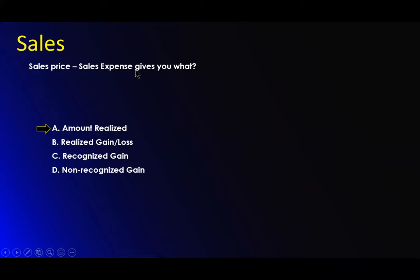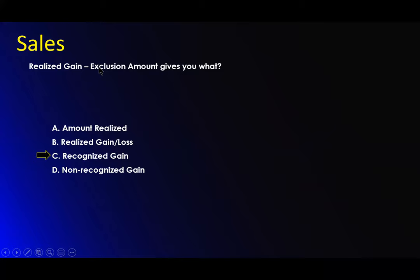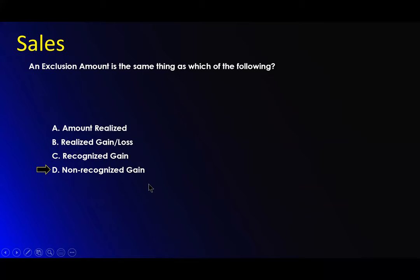Let's run through some questions. A sales price minus the sales amount gives you what? Amount realized from sales. The amount realized minus the basis gives you? Realized gain or loss. The realized gain minus the exclusion amount gives you the recognized gain. An exclusion amount is the same thing as which? An unrecognized gain — that means it's not recognized. An exclusion amount is an amount that is not recognized, not seen by the IRS as being taxable.